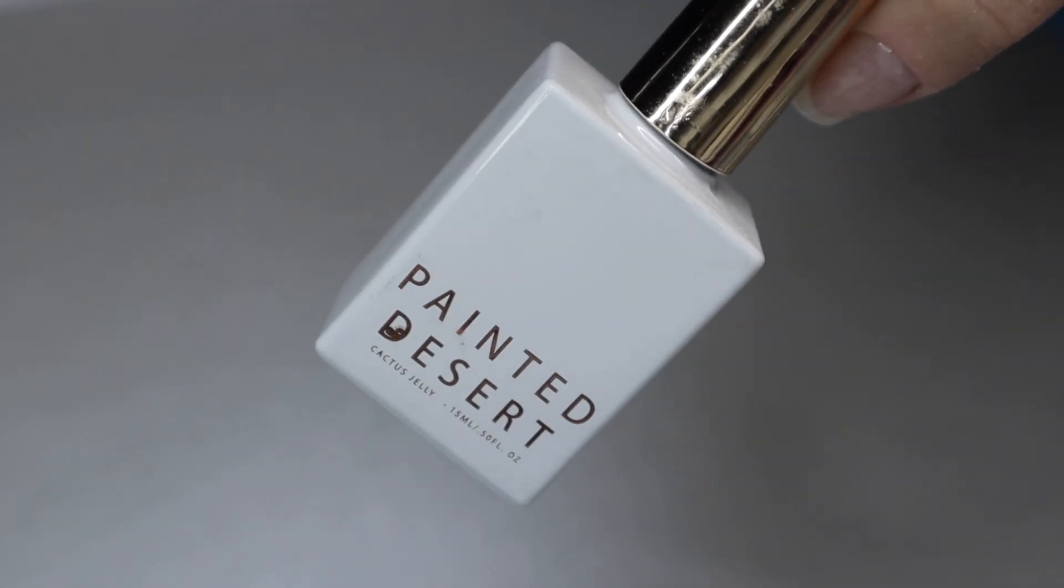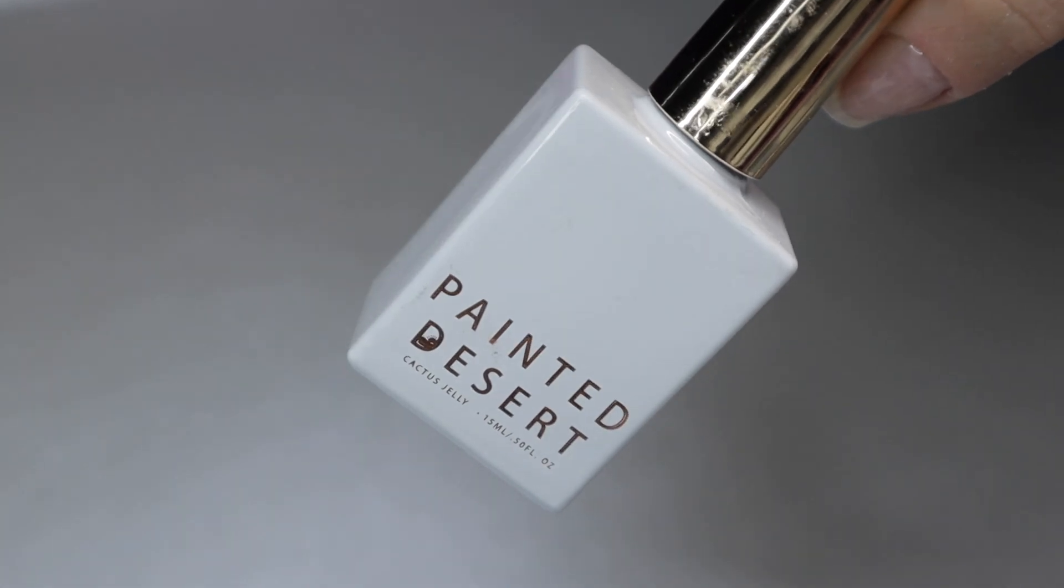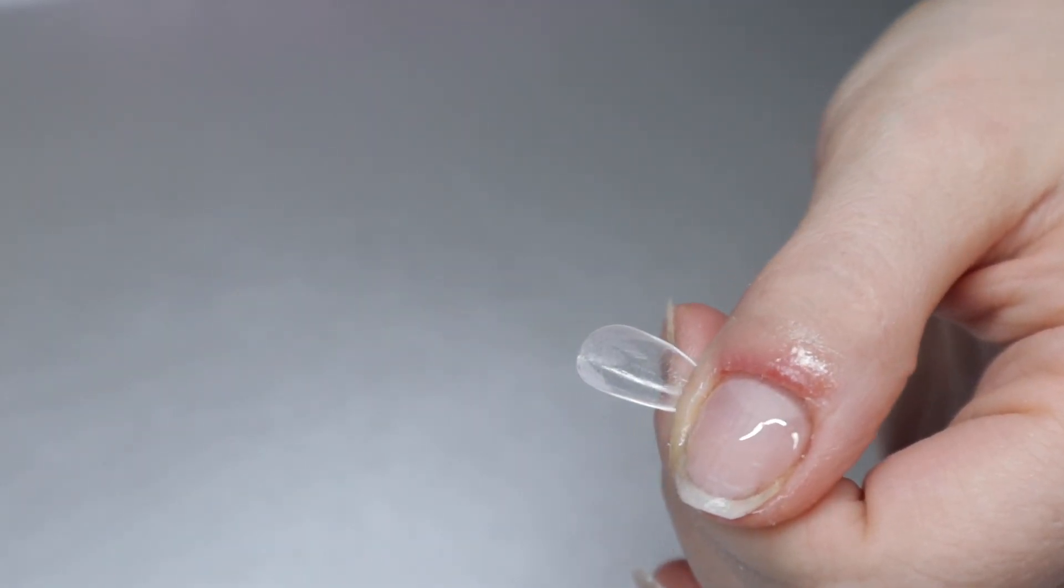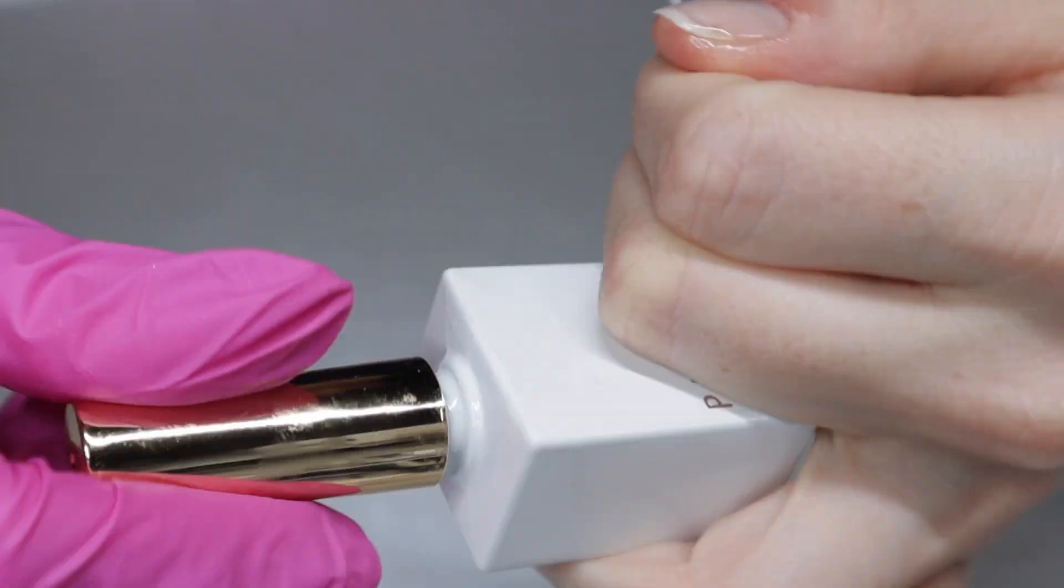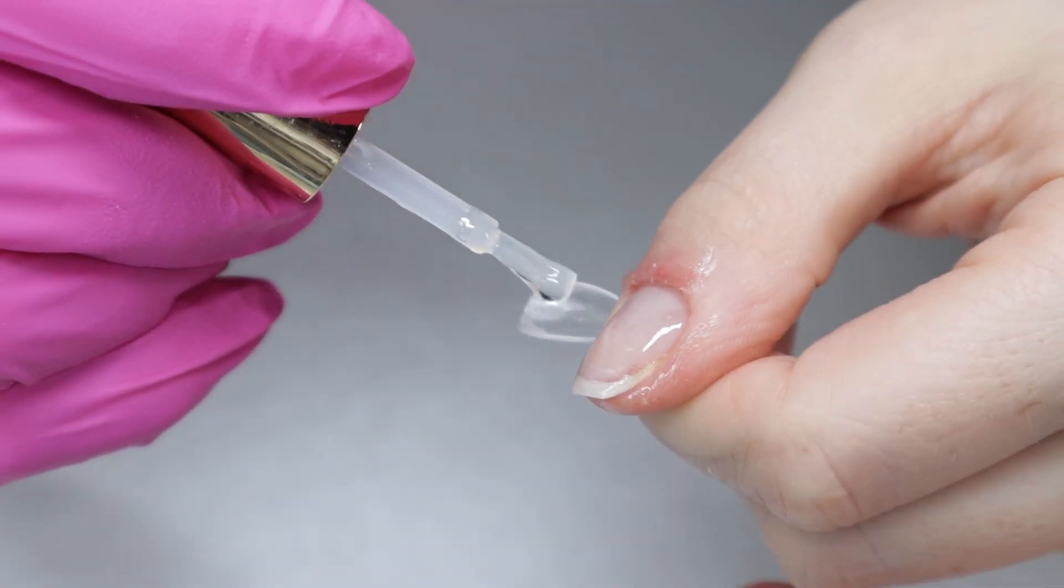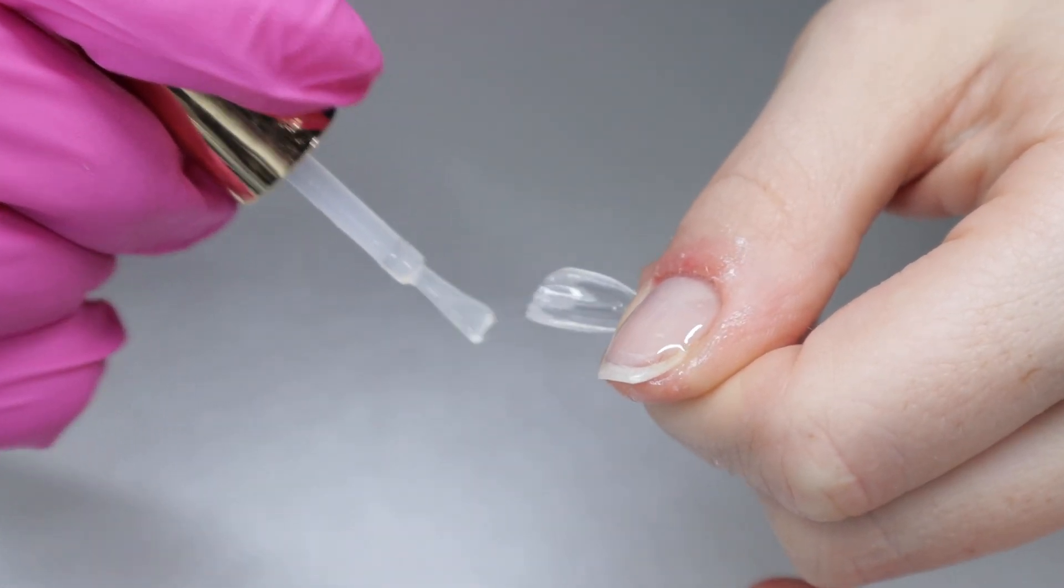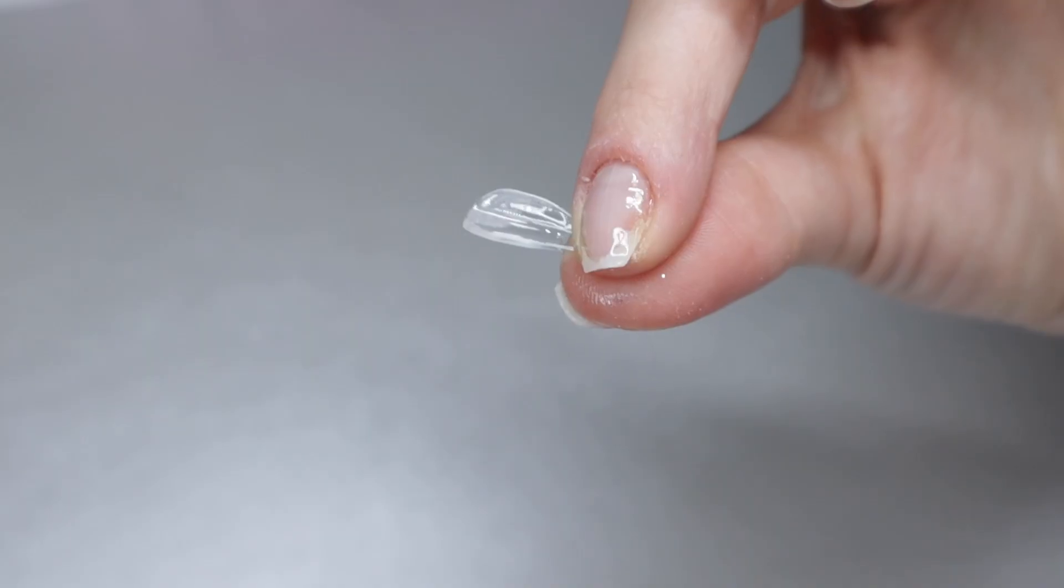The gel I'm going to be using to adhere the jelly tips is the Cactus Jelly from the Painted Desert. What I like to do is take my jelly tip after it's all prepped and ready to go and apply a thinnish layer of the cactus jelly on the inside of the jelly tip. You're going to notice I don't paint on too much. I am dragging it, it's okay.